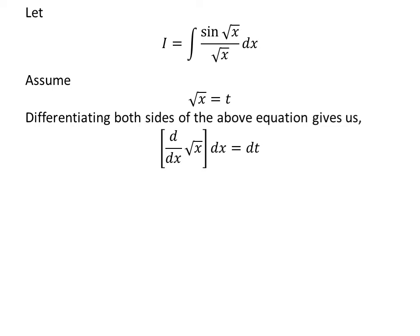Taking differential of both sides gives us derivative of square root of x with respect to x times differential of x is equal to differential of t.